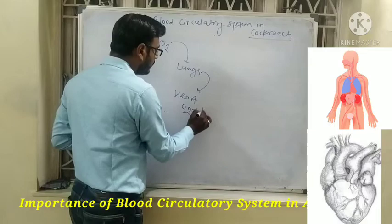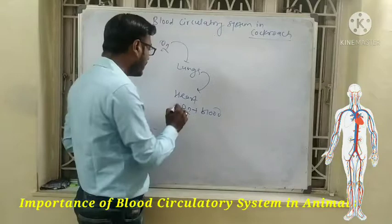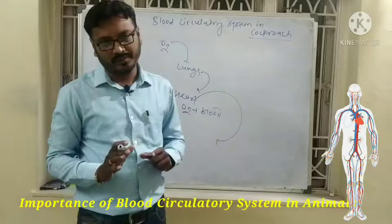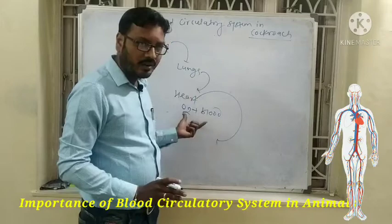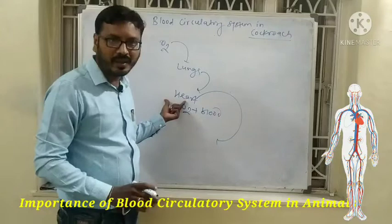This oxygen mixes with the blood and becomes oxygenated blood. This oxygenated blood then goes to the different parts of the body — each and every tissue, each and every cell, each and every organ — due to the pumping activity of the heart.